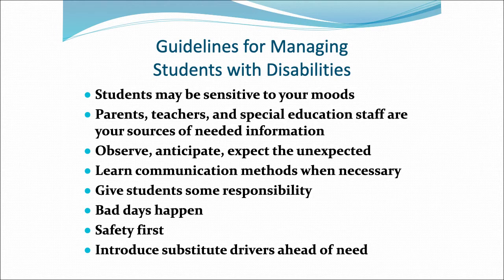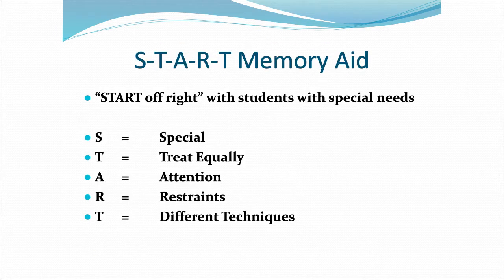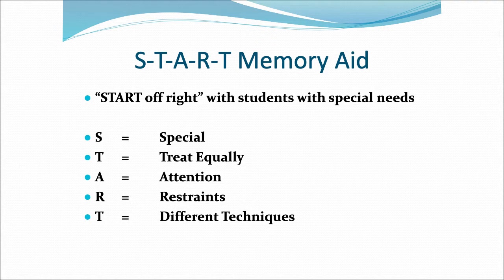Guidelines for managing students will be discussed using a memory aid. S equals Special — every student is unique; the more you know about them, the better you can accommodate them. T equals Treated equally — students with disabilities want to be treated like other students; when possible, require the same rules. A equals Attention — some students may misbehave to get your attention; giving attention when behaving properly may reinforce appropriate behavior. R equals Restraints — special seats or restraints may be required; if your bus is so equipped, learn to use these devices properly and tie down wheelchairs when the bus is moving. T equals Techniques — sometimes your techniques to maintain control of a student's behavior may not work; try something new and keep trying until you find a technique that works.